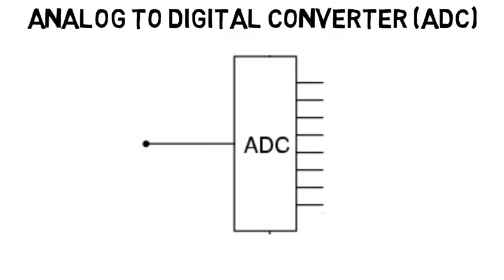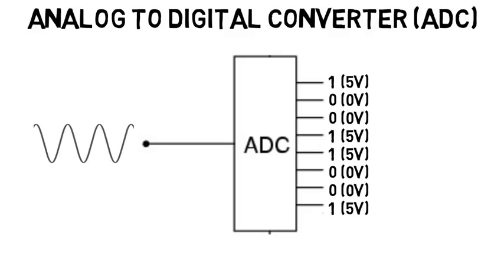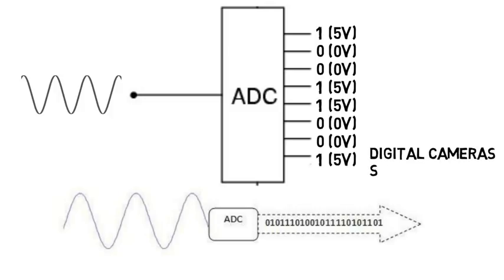An example of a project you can make in mechatronics may include making an analog to digital converter, or ADC. This is a system that takes in an analog voltage, like maybe a sound signal from a microphone, and changes it into a digital signal or 1s and 0s, which are high and low voltages. As the analog signal changes over time, this digital output keeps changing as well, and you get a stream of 1s and 0s. This is used in digital cameras, sound systems, some radar systems, and much more.